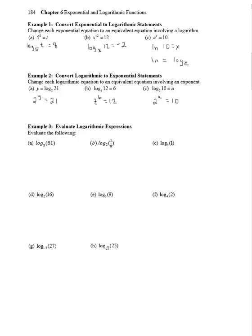Okay, now it wants us to evaluate the following. So how do we do that? Well, if log base 3 of 81, let's say that equals x. That means 3 to the x equals 81. 81 is 3 to the fourth, so x equals 4.